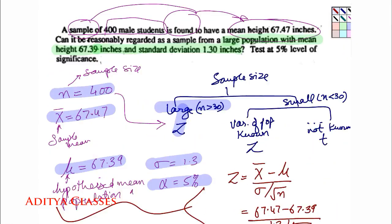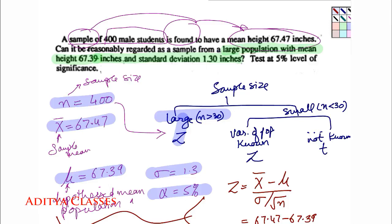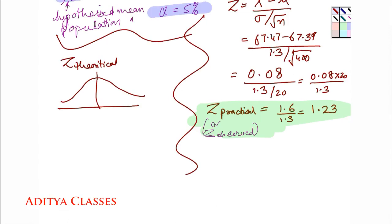Now what is the question? Can it be reasonably regarded as a sample from large population? Now does this question anywhere mention about increase or decrease in mean? I don't think so. There is no such word which is indicating that the mean is increased or decreased. So in absence of any such measure, what do we call it? We call it a non-directional hypothesis because it is lacking a direction.